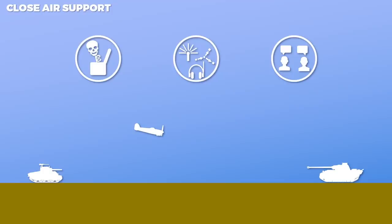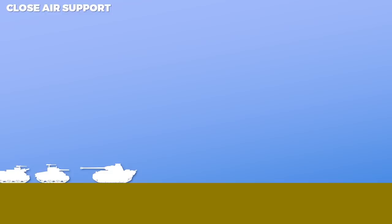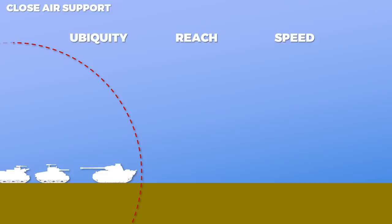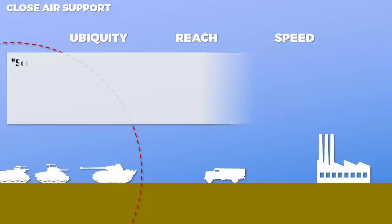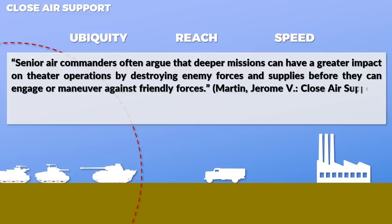For the fighting men on the ground, the most immediate threat is usually the one right in front of them and thus should be engaged first. Yet air power has unique qualities — ubiquity, reach, and speed — which allows air forces theoretically to strike targets out of range of artillery and other weapon systems. As such, senior air commanders often argue that deeper missions can have a greater impact by destroying enemy forces and supplies before they can engage or maneuver against friendly forces.